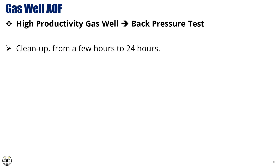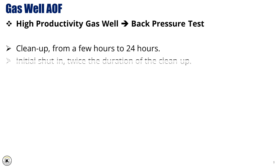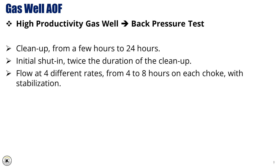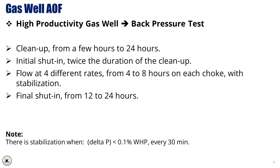In the case of a high productivity gas well, a back pressure test is performed to evaluate well performance. First, we begin with a cleanup phase, which can last anywhere from a few hours to up to 24 hours, depending on the well conditions, to clear out any initial impurities or water. After the cleanup, the initial shut-in phase begins, lasting twice the duration of the cleanup phase, allowing the pressure to stabilize. Next, we flow the well at four different rates, each tested for about four to eight hours, adjusting the choke as needed. Finally, we perform a final shut-in for 12 to 24 hours, recording pressure and other important data to evaluate the long-term performance and stability of the well.